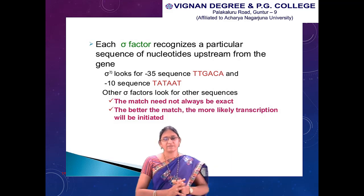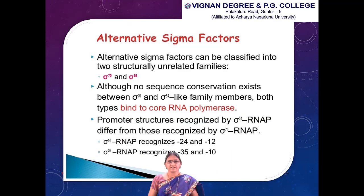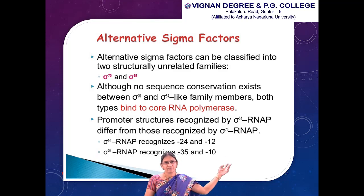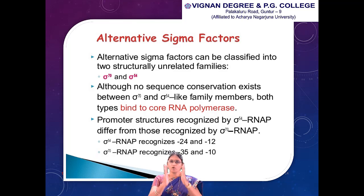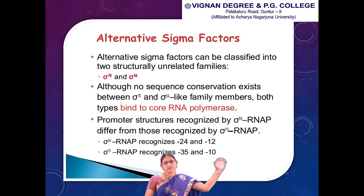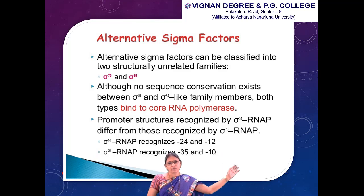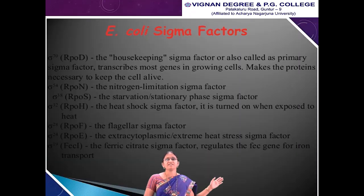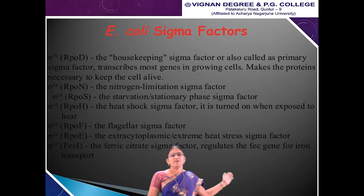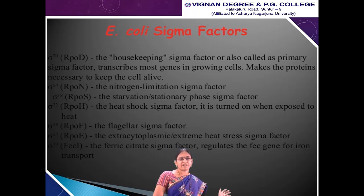Alternative sigma factors can be classified into two structurally unrelated families: sigma 70 and sigma 54. Although no sequence conservation exists between sigma 70 and sigma 54 family members, both types bind to core RNA polymerase. Promoter structures recognized by sigma 54 RNA polymerase differ from those recognized by sigma 70. Sigma 54 recognizes minus 24 and minus 12 sequences, whereas sigma 70 recognizes minus 35 and minus 10 sequences. The various sigma factors are sigma 70, sigma 54, sigma 38, sigma 28, sigma 24, and sigma 19 — all different types of specificity factors encoded by different genes.